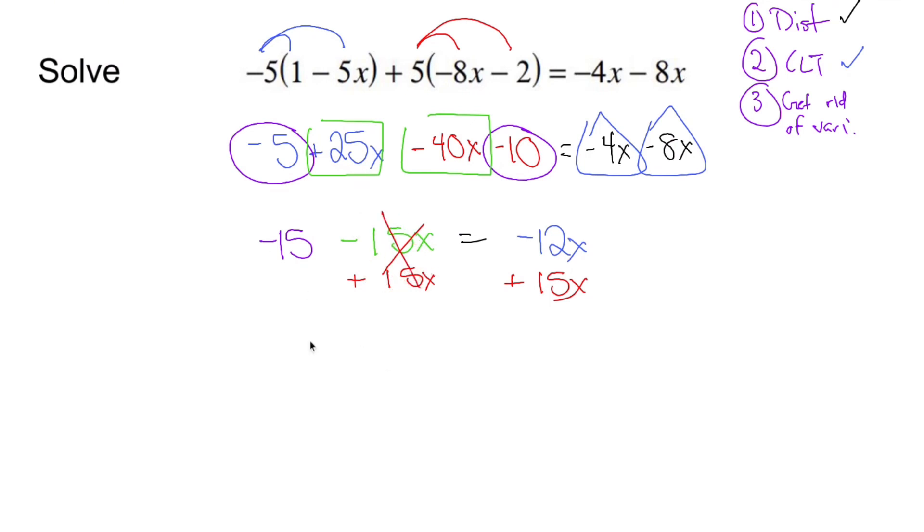And now, instead of having two things on the left side, I have one thing on the left and one thing on the right. The negative 15 drops down, you're gone. Equals drops down. 15 X's minus 12 X's is three X's.